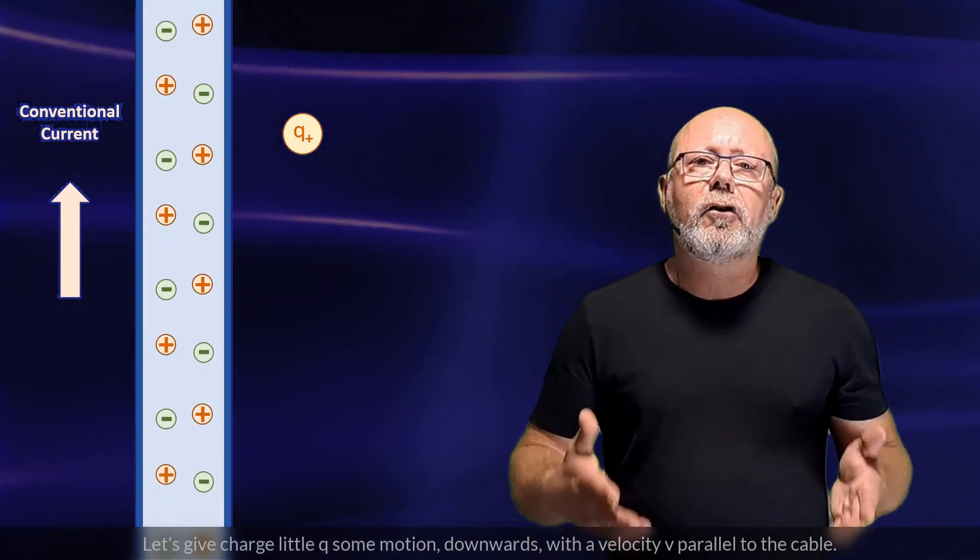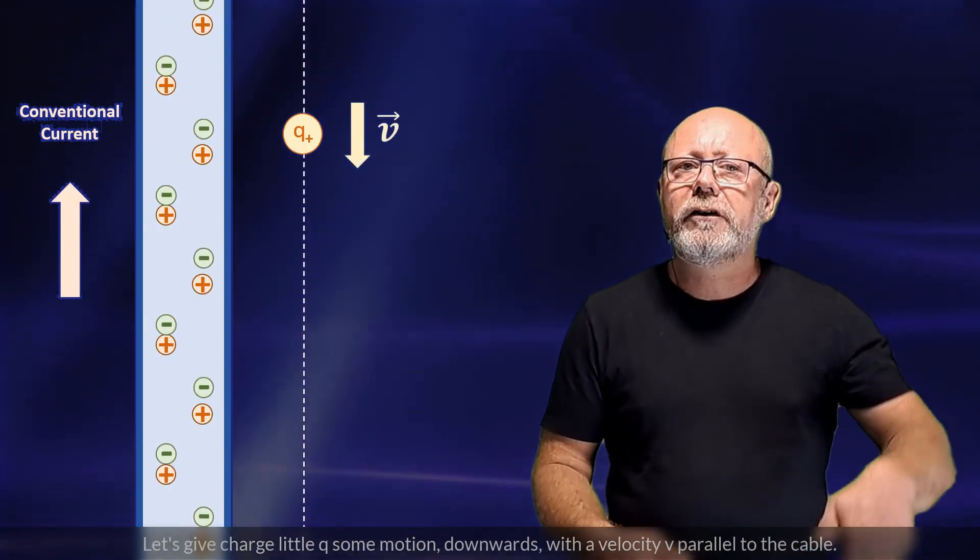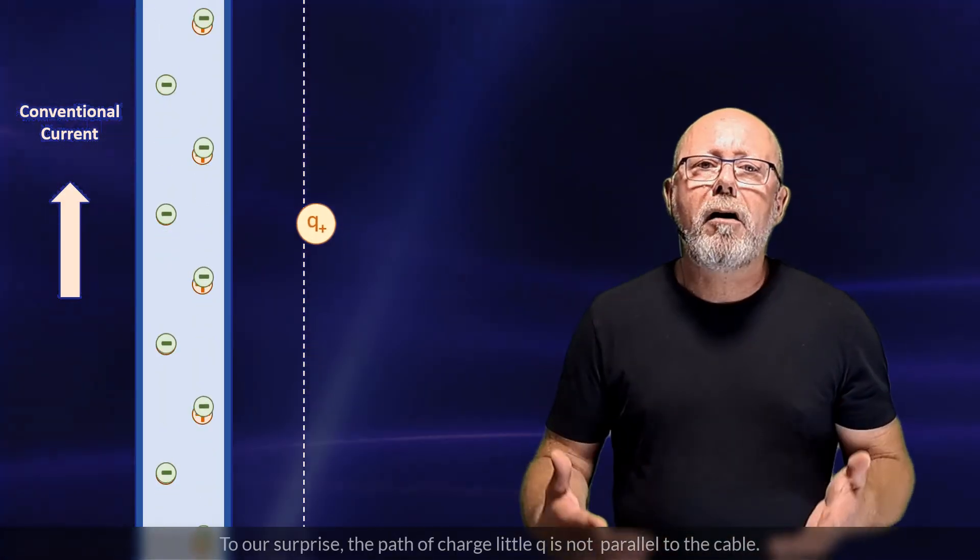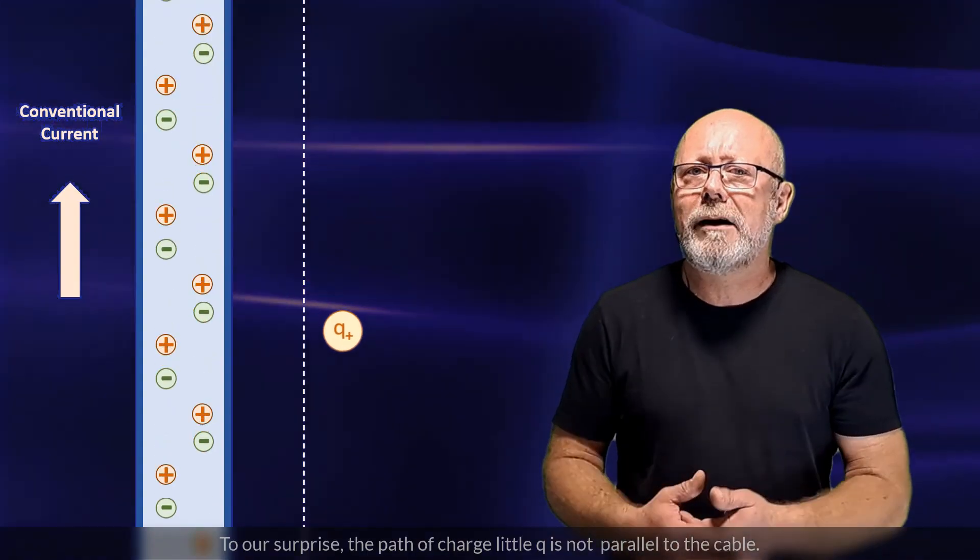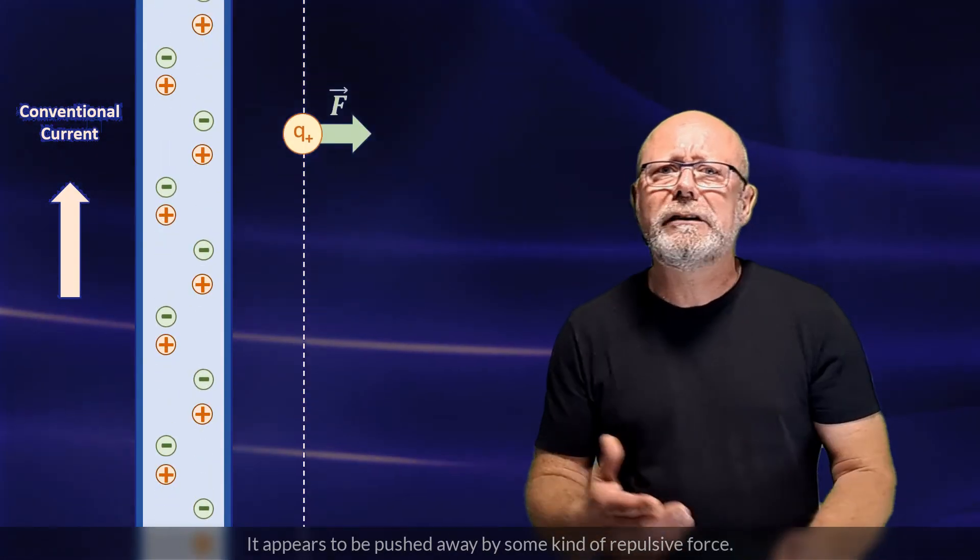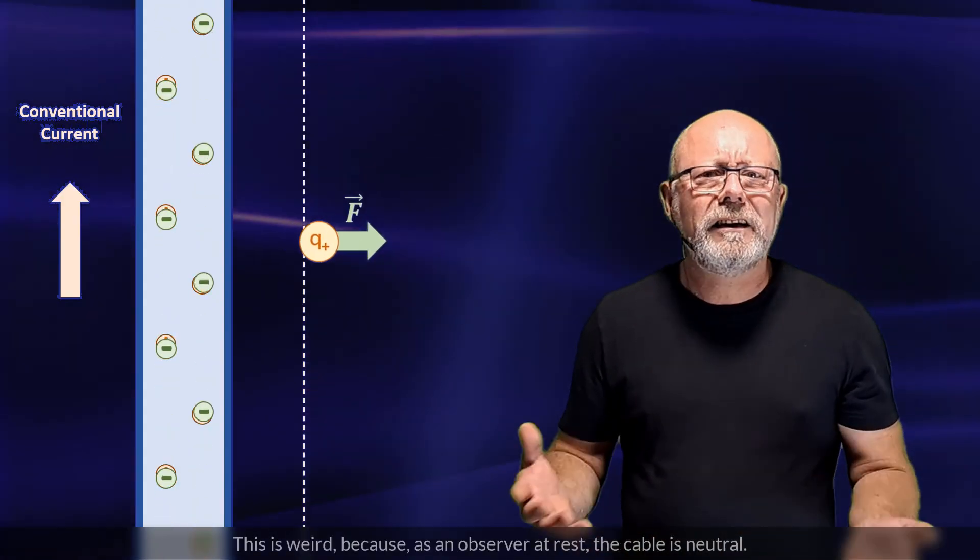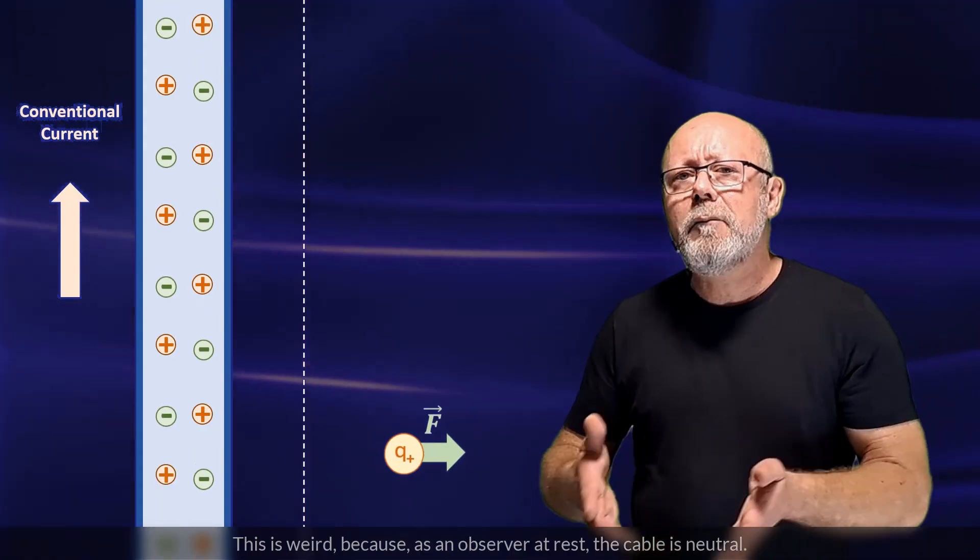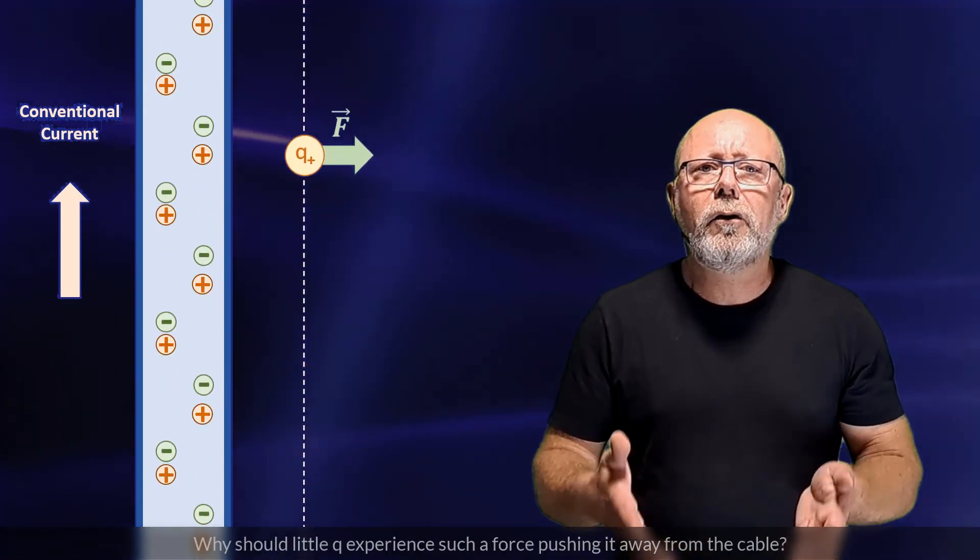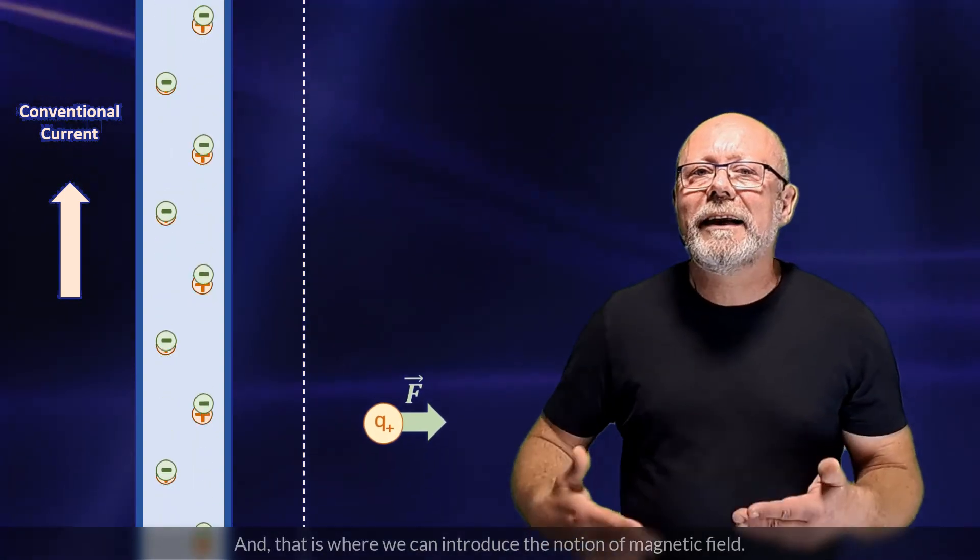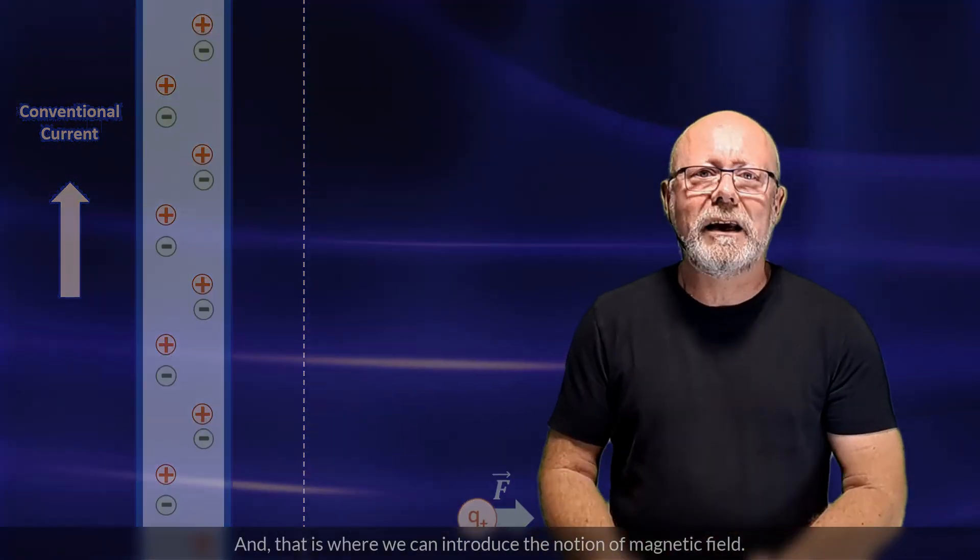Let's give charge little q some motion downwards with a velocity v parallel to the cable. To our surprise, the path of charge little q is not parallel to the cable. It appears to be pushed away by some kind of repulsive force. This is weird, because as an observer at rest, the cable is neutral. So, why should little q experience such a force, pushing it away from the cable? And that is where we can introduce the notion of magnetic field.